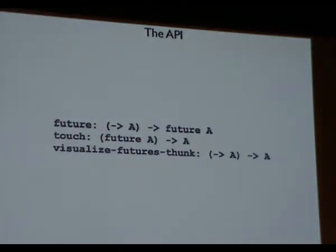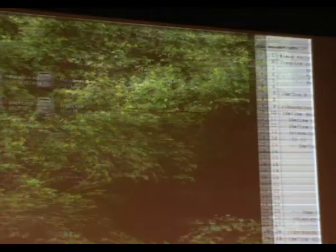So, quickly, these are basically the three primitives that are relevant to us here. I've kind of described these a little bit. So, future accepts a thunk that returns a value of type A, of any type, and returns a value, a future value, of type A. Then, touch accepts an argument of future of type A, and returns an A, eventually. And then, this third thing here, visualize futures thunk. That's a parameter that we can use to actually show a graphical window that gives us a description of the timeline, the execution timeline of a future program. So, this is what we use to invoke the profiler for futures. So, this thing takes a thunk that returns an A, and then returns an A to us.